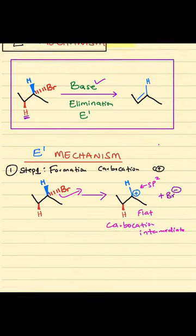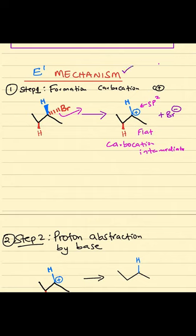Let's look at the mechanism. E1 mechanism, Step 1. This step is very similar to what we saw for the SN1 mechanism, because the first step is the formation of the carbocation intermediate. And how does that happen?